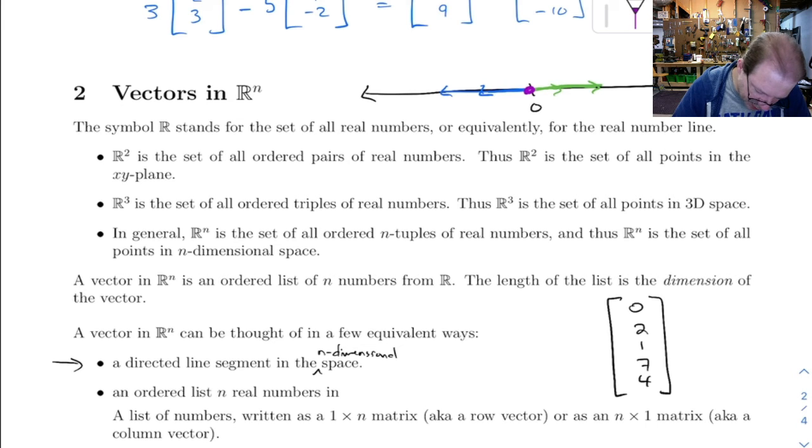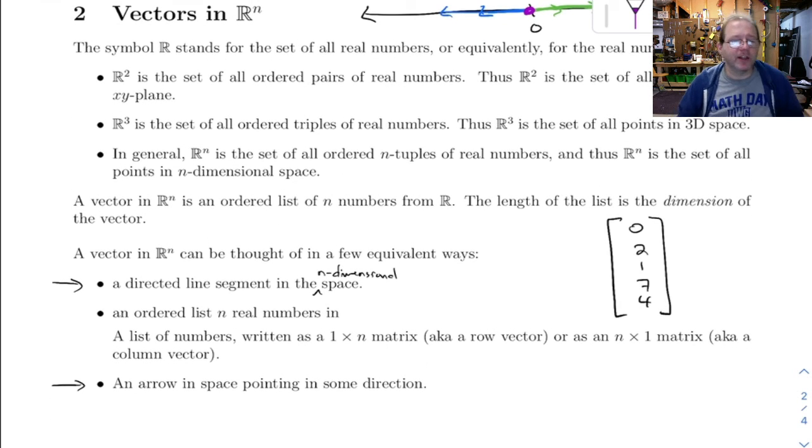And really, I should have put these two together, because they really say the same thing. A vector, you can think of it as a directed line segment or as an arrow. That's a line segment from the tail to the head.